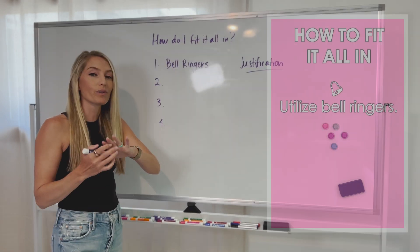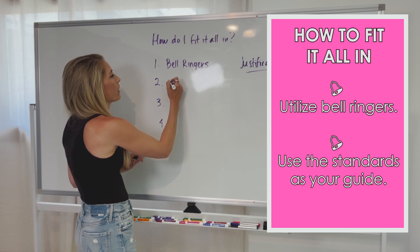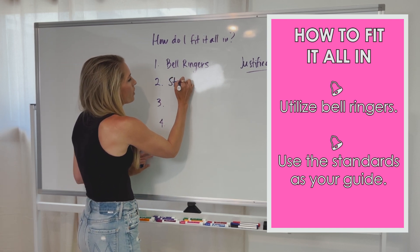So we're utilizing and harnessing those first five to 15 minutes of class, depending on how much time you set aside for your bell ringers to really make sure that we are making the most of that time to be covering the standards, to be fitting it all in, which is one of our biggest pain points. So that's the first one is utilizing bell ringers. Number two that we're going to talk about is using the standards as your guide.